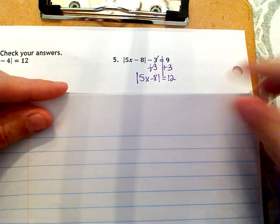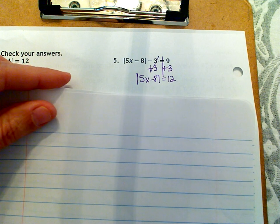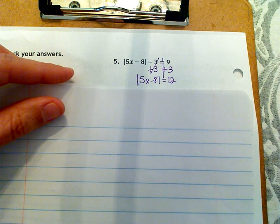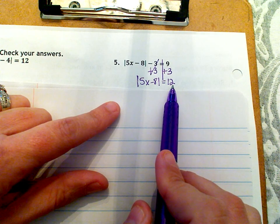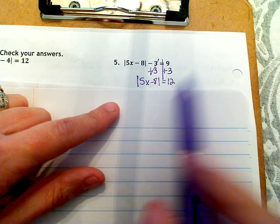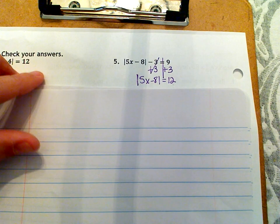And so what that leaves me with is the absolute value of 5x minus eight equals 12. At this point, you're going to make the decision of whether it's no solution or just keep going. If this equals a positive number, keep going. If it equals a negative number, you're done. It's no solution. So we're going to keep going.